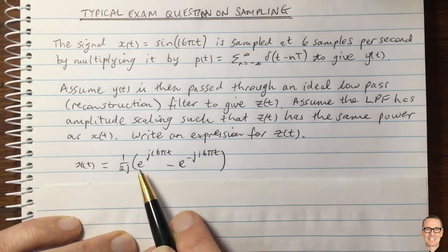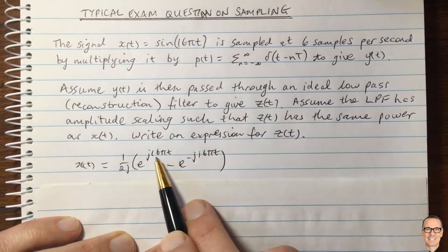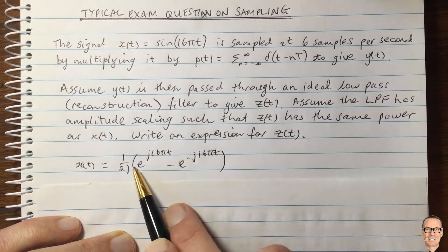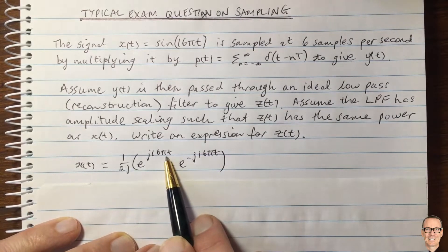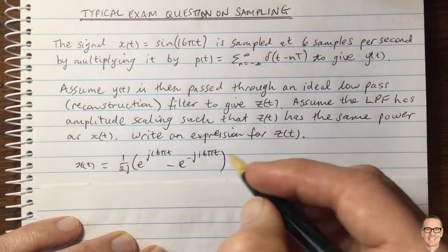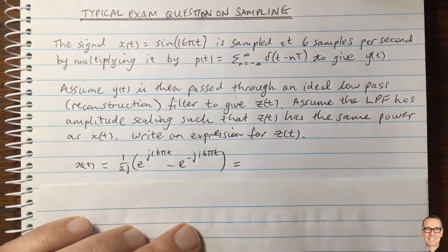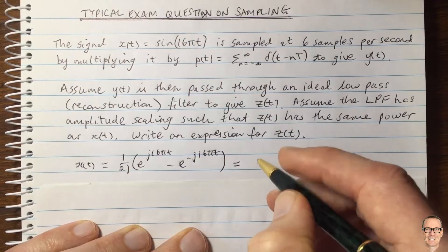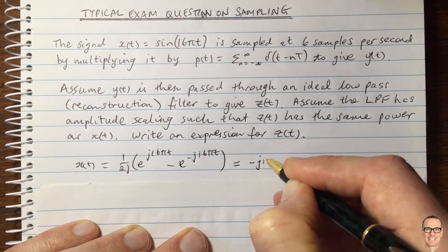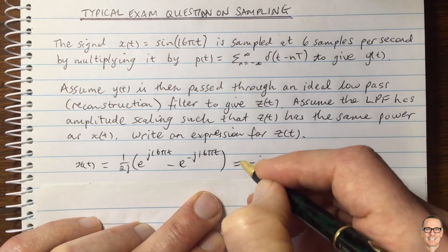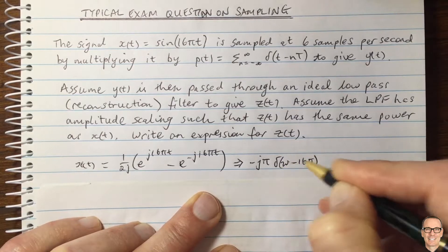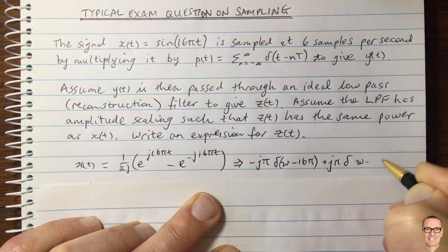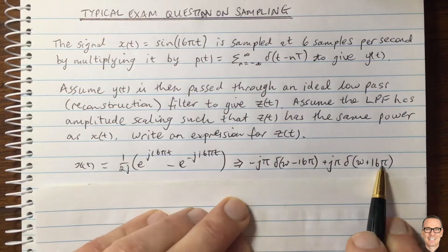What's the Fourier transform of this? We know that the Fourier transform of a constant times e to the j omega t is 2π times a shifted delta. Multiplying top and bottom by j squared gives minus j out the front. So the Fourier transform is: minus j·π·δ(ω − 16π) plus j·π·δ(ω + 16π). This is the Fourier transform of Xt.